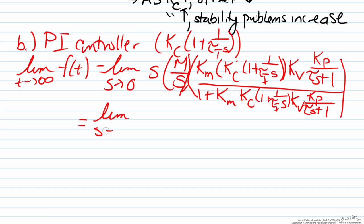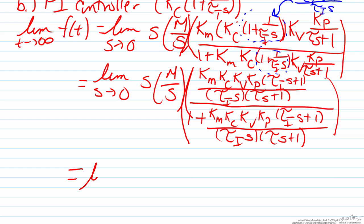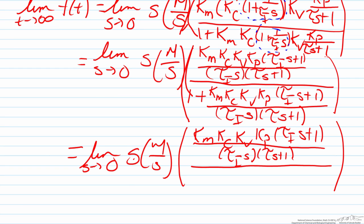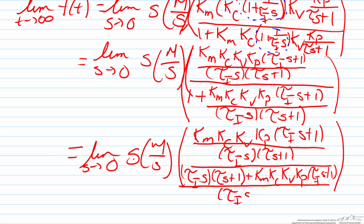And then our denominator will be one plus the exact same value as we had in the numerator. So before we do any analysis what we are going to do is simplify our numerator and denominator by finding the least common denominator. So to do that we are going to first rewrite what is in the parenthesis for the I control as tau_i s plus one over tau_i s. Now we will find the least common denominator for the denominator. And now our denominator will have tau_i s times tau s plus one plus Km Kc Kv Kp times tau_i s plus one divided by the tau_i s times tau s plus one.